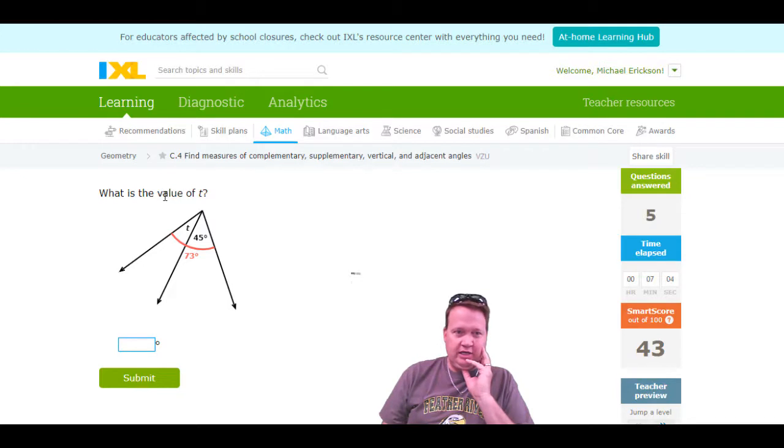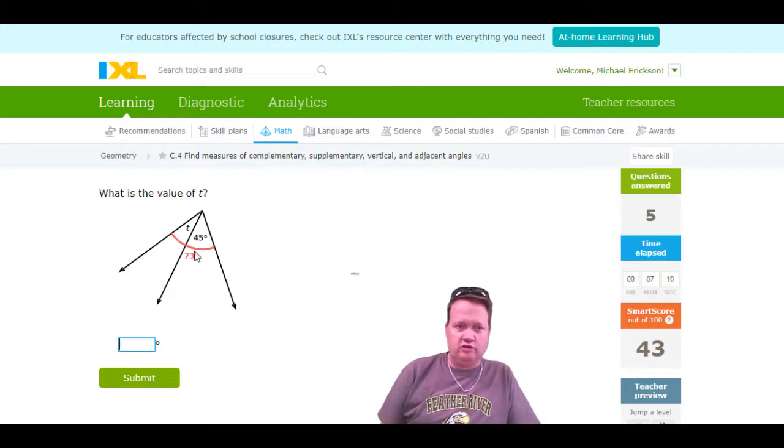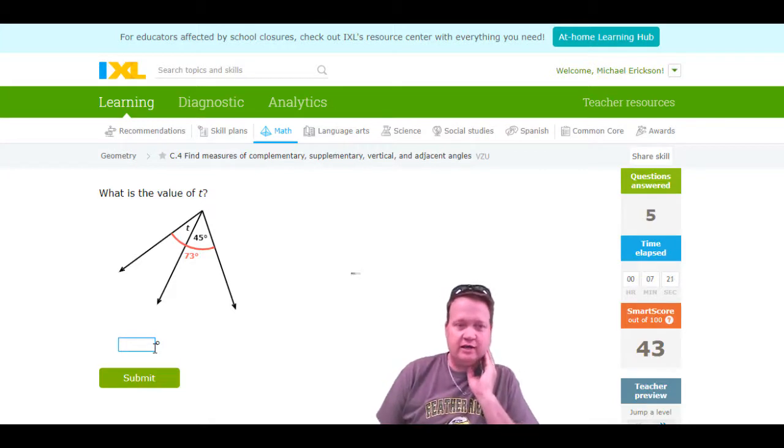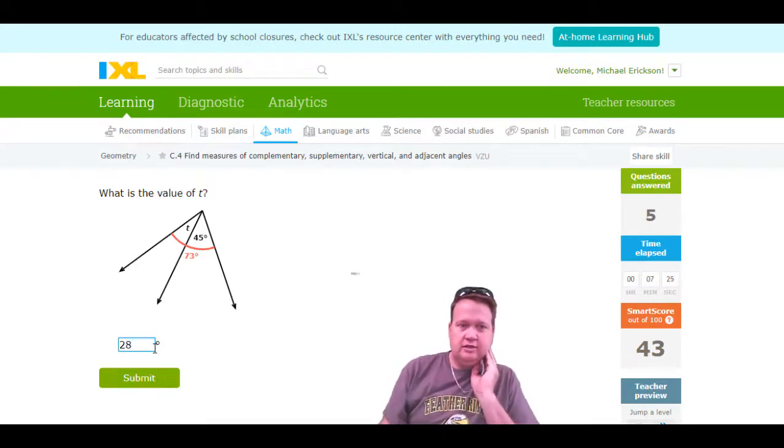Now we can see they're asking for the value of T. We don't know the total. It's not 90, it's not 180, but it's only 73. To find T, we're going to just go 73 and take away 45. I'm sorry, so that's going to be 28 degrees is T. 73 take away 45.